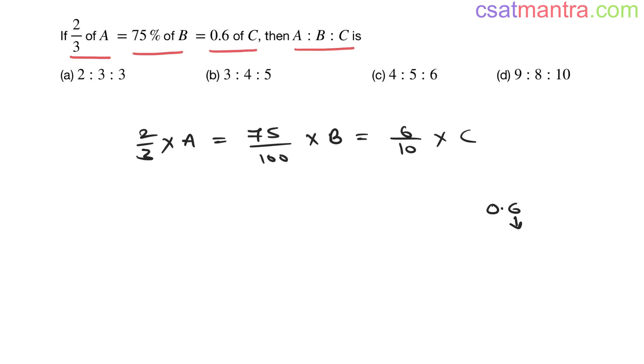0.6 - one digit is there after decimal point, so you would be having 6 by 10. If you have 2 digits after decimal, you would be having 6 by 100. 2 zeros are there.